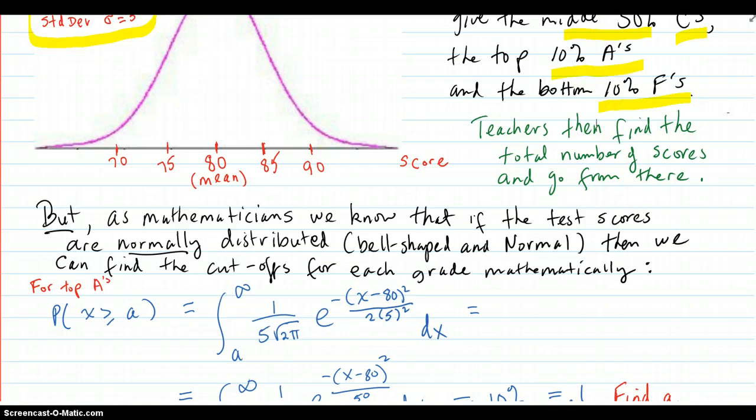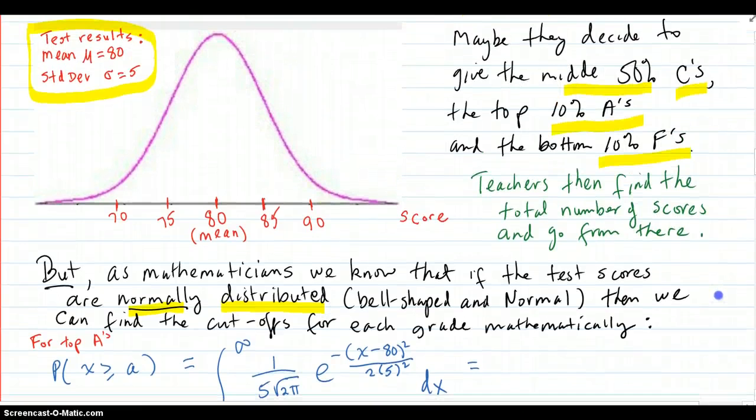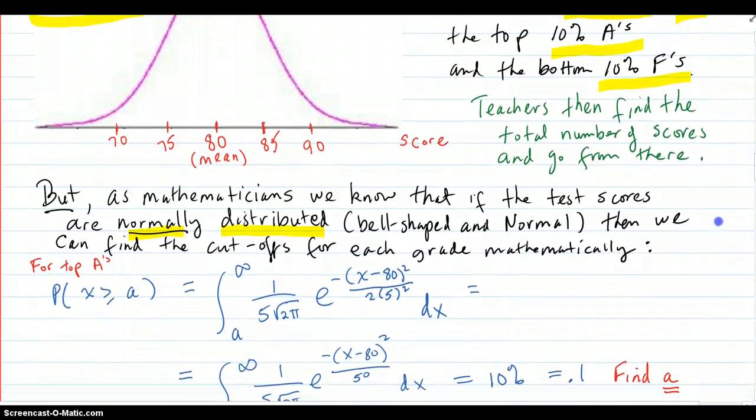Okay. So, we know that if the test scores are normally distributed, then by that previous video, we know that's very special. Not only bell-shaped, but have very special area qualities.